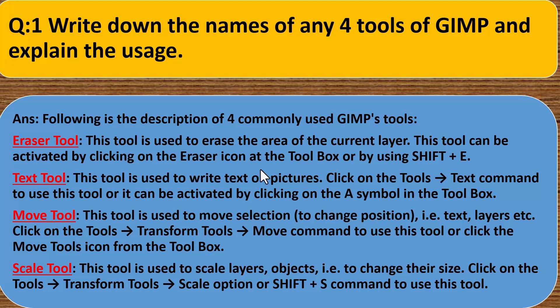Text tool. This tool is used to write text on picture. Click on the tools, text command to use this tool or it can be activated by clicking on the symbol A in the toolbox. Move tool. This tool is used to move selection to change position, text, layer, etc.